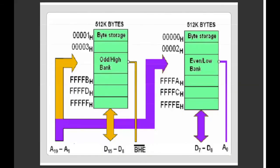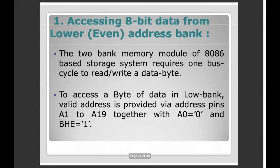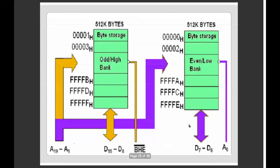We will check how to use the data bus. Number 1 is D0 to D7 and we use the lower byte. D8 to D15 is the higher bit. When I give pin A0 = 0 and BHE = 1, then I will work with the low byte. When A0 = 0 and BHE = 0, I will work with the lower byte as well.